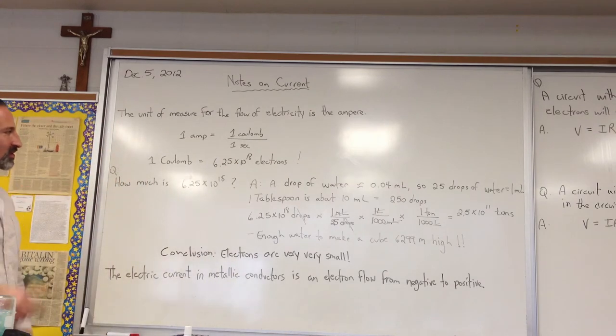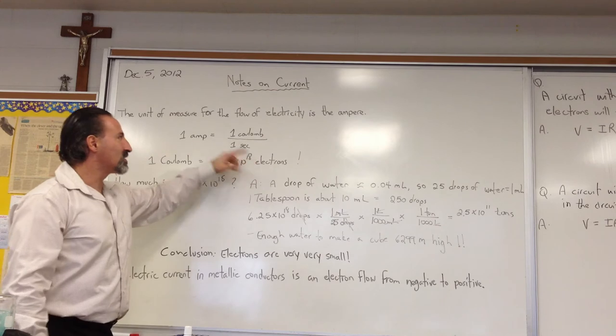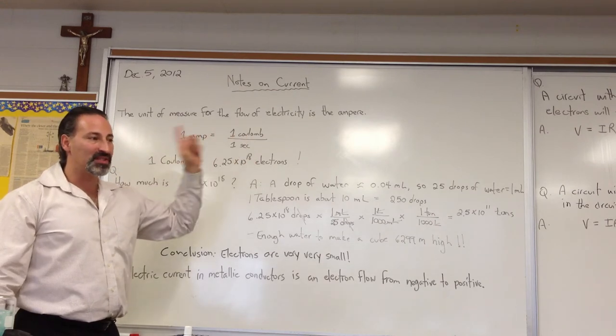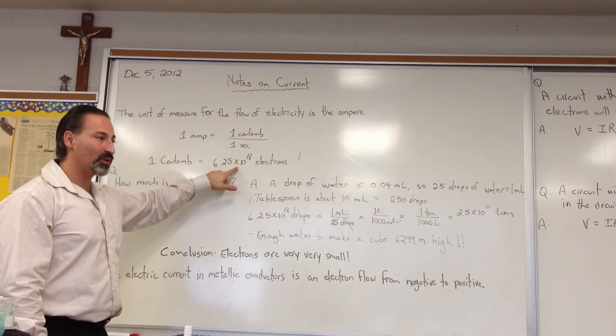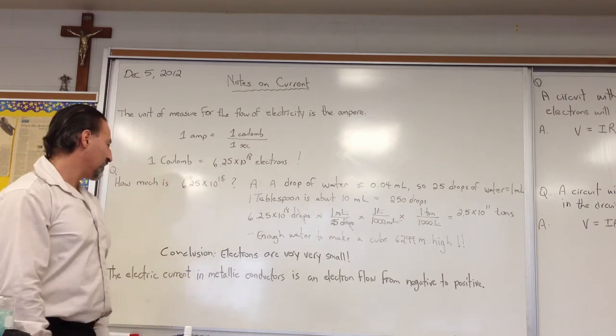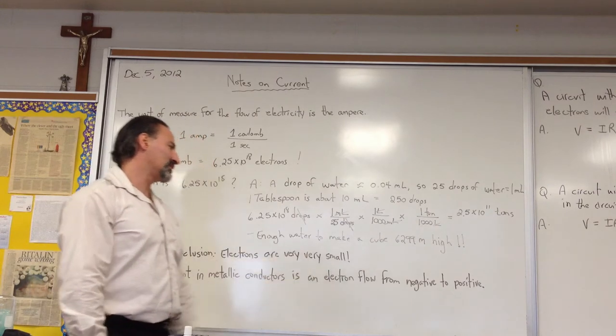How much is 1 coulomb of electricity? It's that many electrons flowing through a circuit for every second. So, a 1 amp flow of electricity means that many electrons are flowing through the wire every second. So, in conclusion, electrons are very, very small.